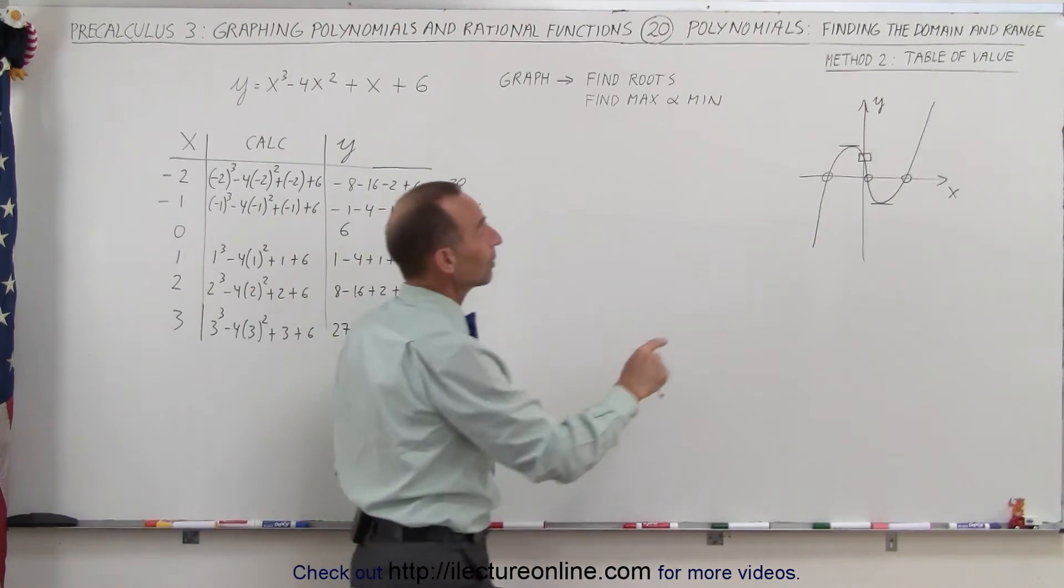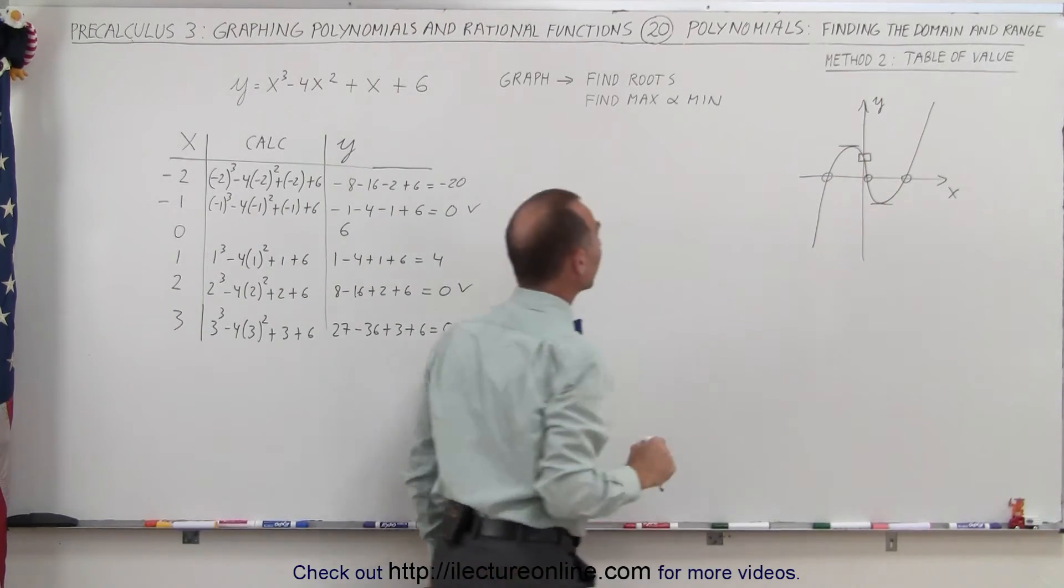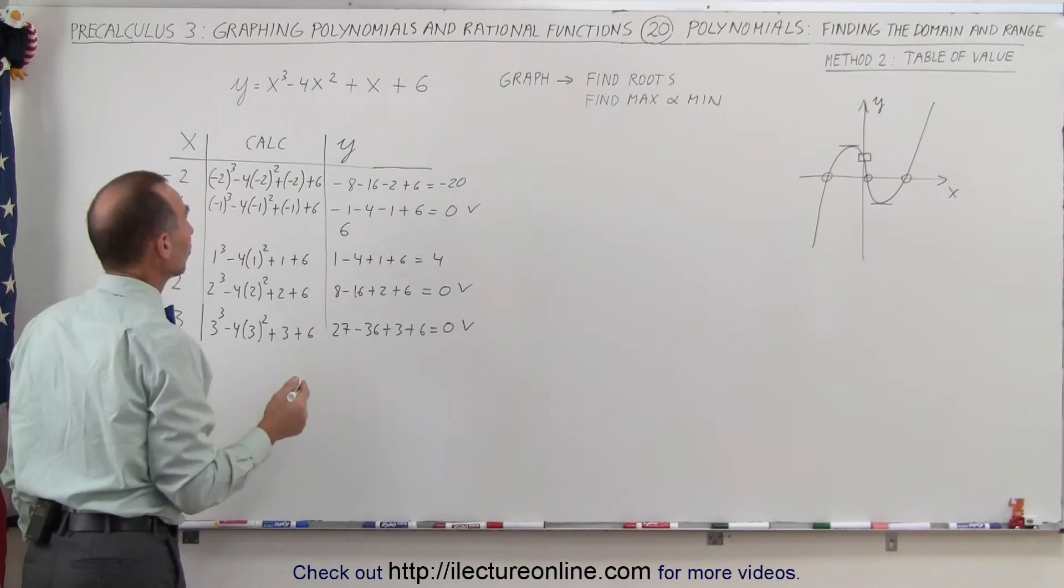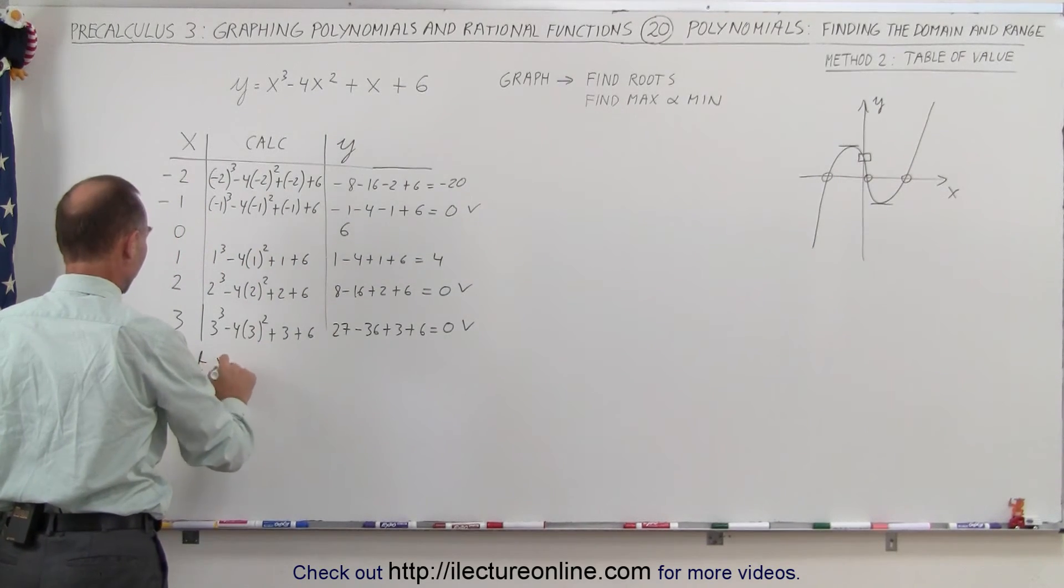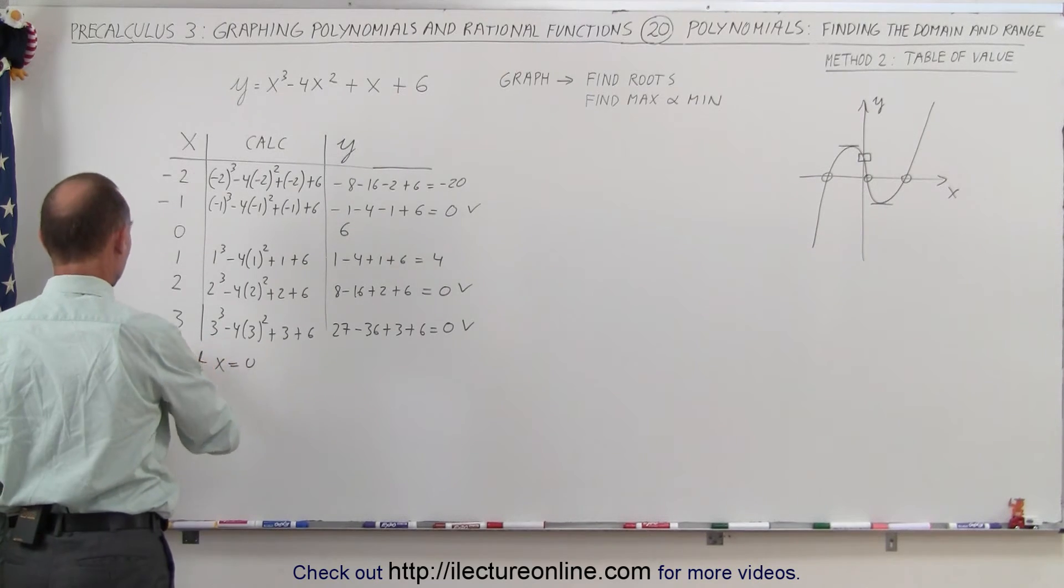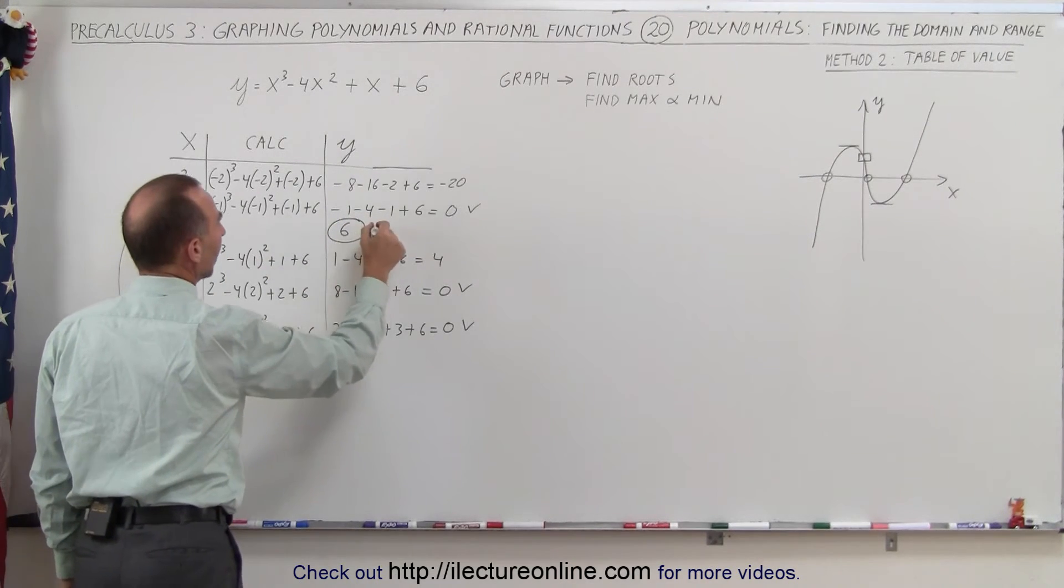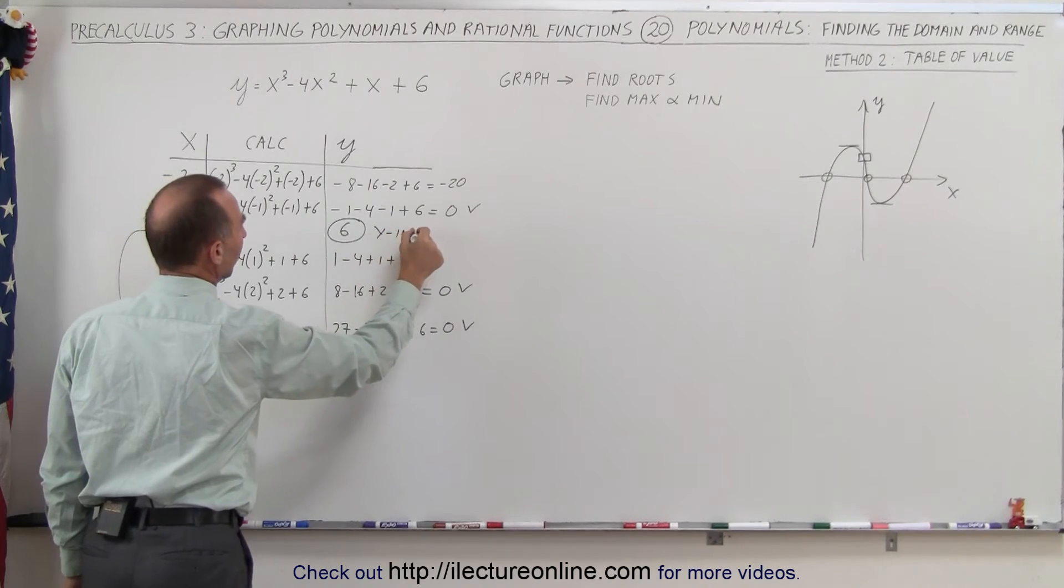We may want to do one more thing, try to find the y-intercept. So to find the y-intercept we set x equal to 0. So set x equal to 0, then we come up here. There it is. So this here would be our y-intercept. We already found that point.